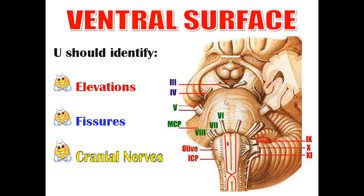Regarding the pons, in the middle there is a groove formed by the basilar artery called the basilar groove. We have transverse fibers called transverse pontine fibers. These transverse pontine fibers collect to form the middle cerebellar peduncle. The middle four cranial nerves exit from the pons.